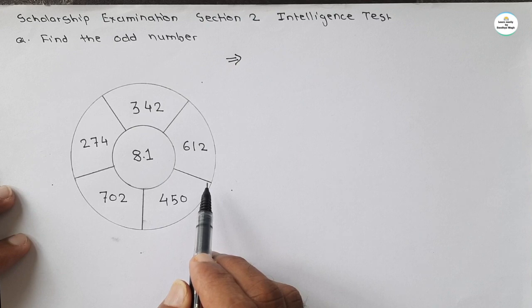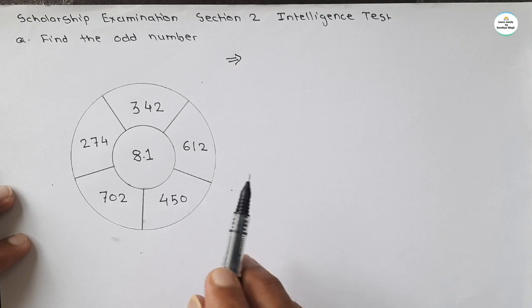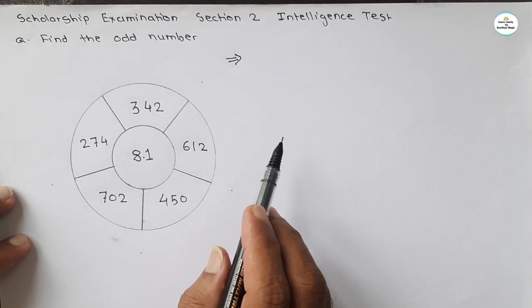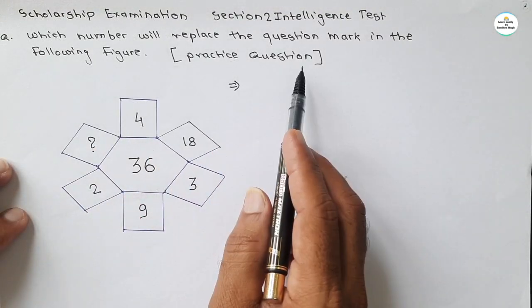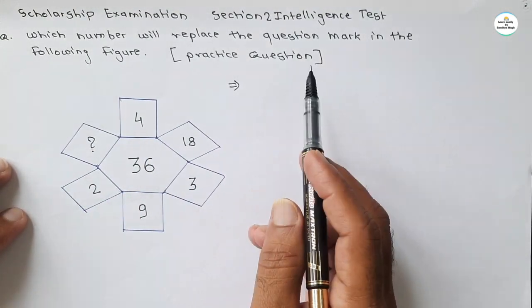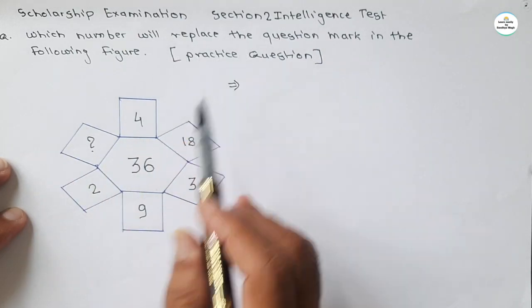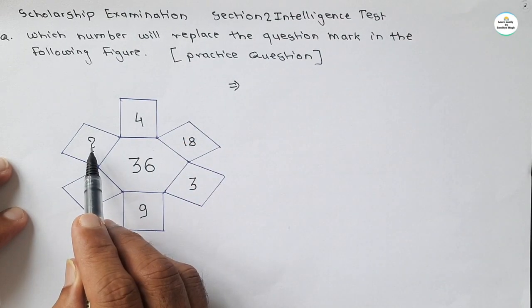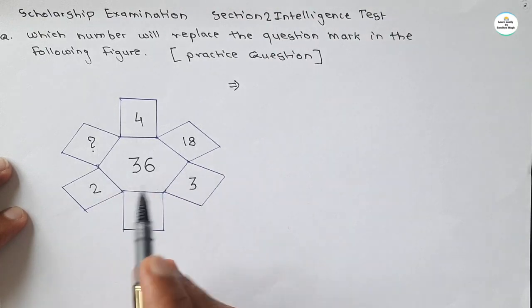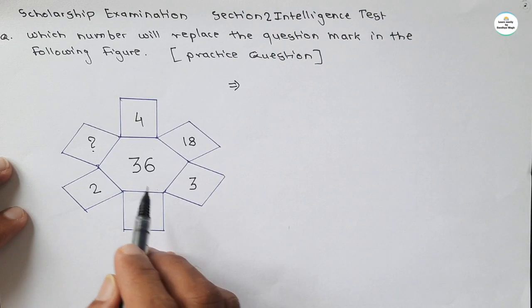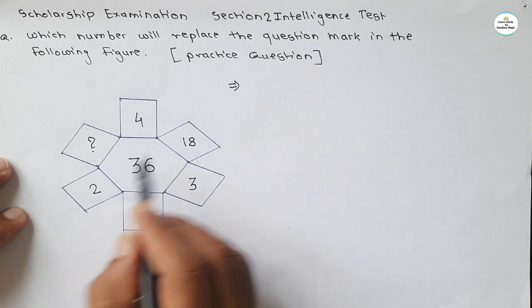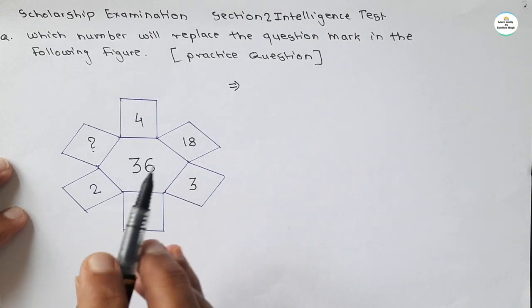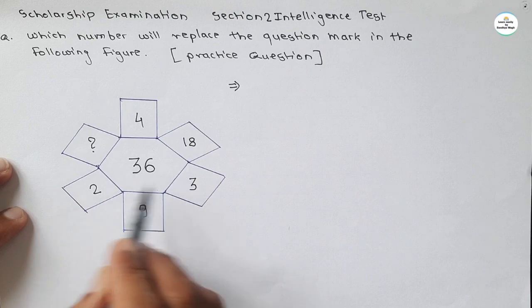But before giving the solution of this question, let's see the solution of the practice question I gave in the last video. This was the practice question given in the previous video — we had to replace the question mark with the proper number. The central number is 36 and we need to find the relation between the opposite numbers.